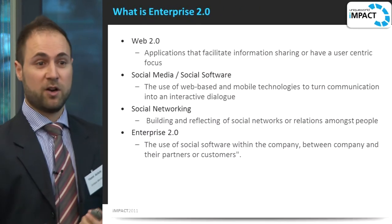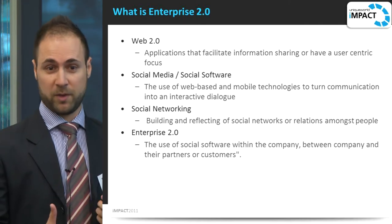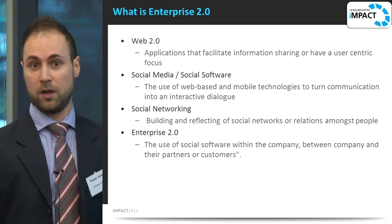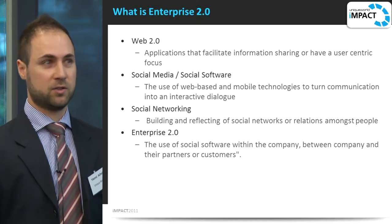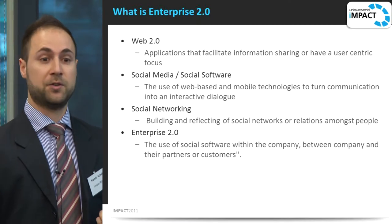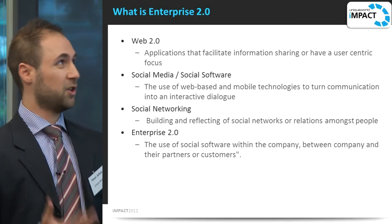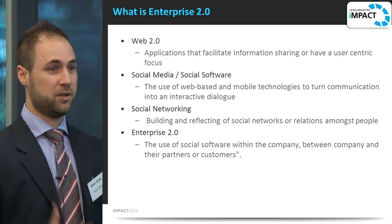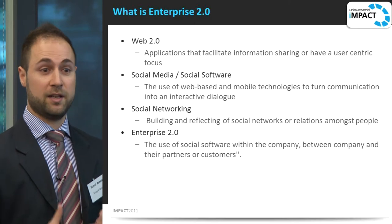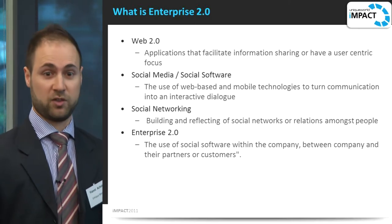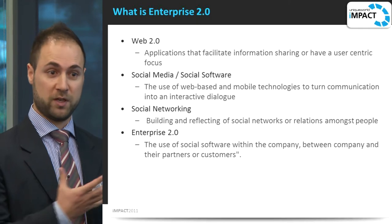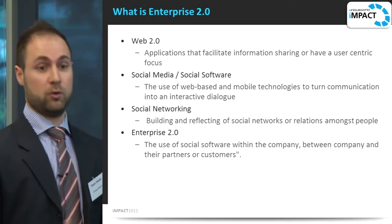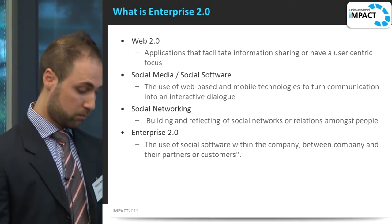There are a lot of words that kind of mean the same thing, but they're all slight variations. Web 2.0 has been out for a while — it really means it's all about the facilitation and sharing of information. Social media is the software that facilitates that, and social media and social software are kind of interchangeable. Social networking is an implementation of social media, so things like Facebook use social media software but it's actually a social networking tool. Enterprise 2.0 is really using all of the above in your company or organisation.